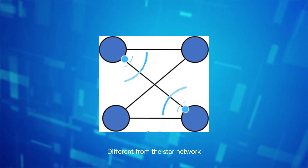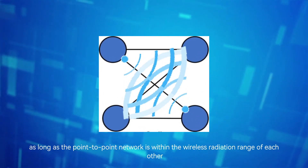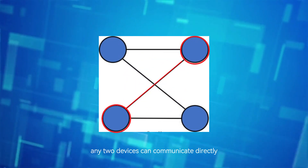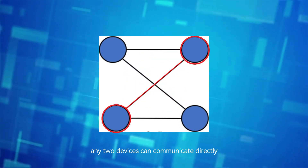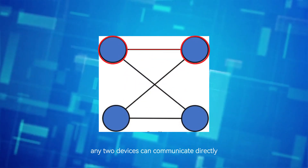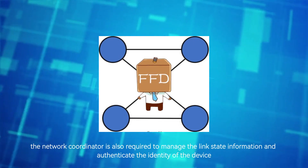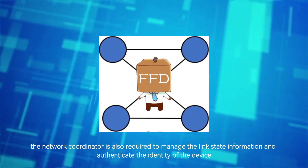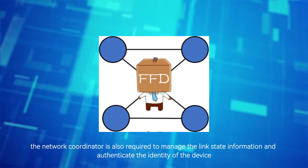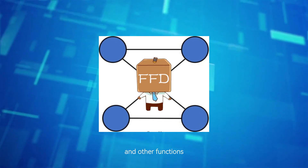Different from the star network, in a point-to-point network, as long as devices are within the wireless radiation range of each other, any two devices can communicate directly. In the point-to-point network, the network coordinator is also required to manage link state information, authenticate the identity of the device, and perform other functions.